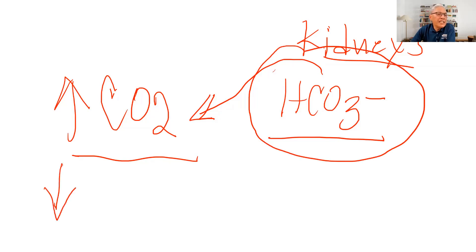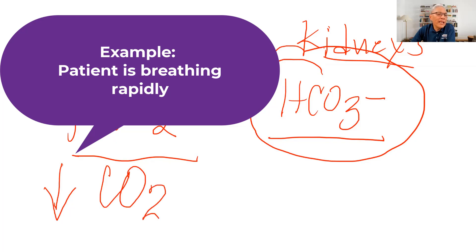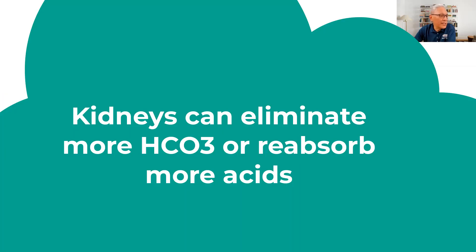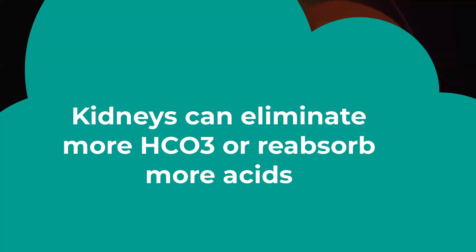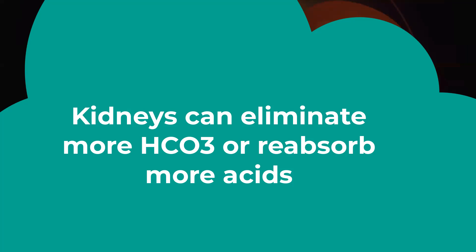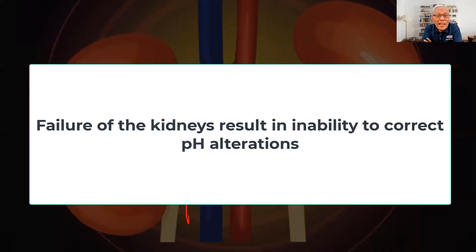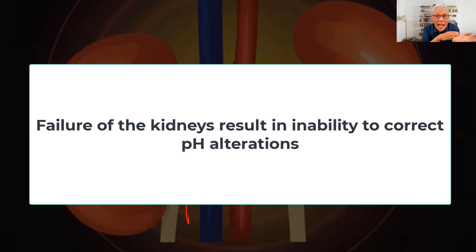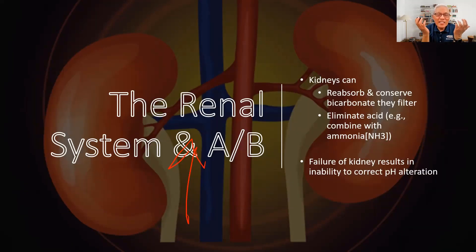If there is a decrease in carbon dioxide, the kidney compensates by eliminating bicarbonate in order to maintain acid-base balance. In cases of kidney failure, there will be an inability to correct acid-base abnormalities. Patients with renal dysfunction will therefore have a significant challenge maintaining acid-base balance. That is the conclusion of the first part of this lecture.